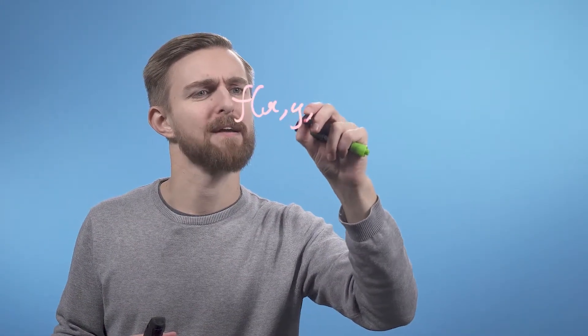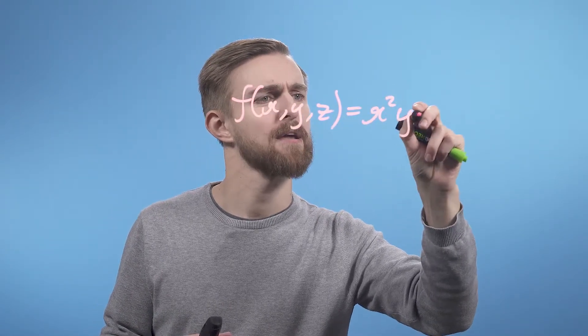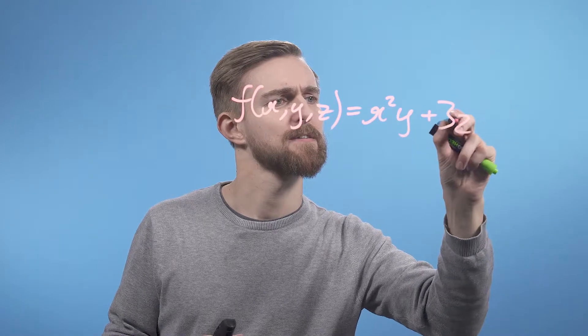Let's start by looking at a nice simple function to see just how straightforward building a Jacobian can be. Consider the function f(x, y, z) = x²y + 3z.